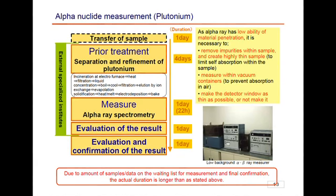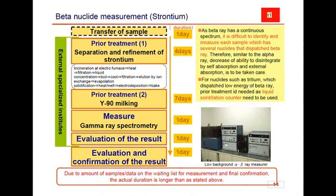For strontium, a nuclide within beta rays, prior treatment also takes a slightly long period of time. After the milking procedure by yttrium, it is measured by the gamma ray spectrometer. This procedure also takes 15 days, around two weeks. However, due to the waiting list and data organization, an analysis of strontium now takes about a month.